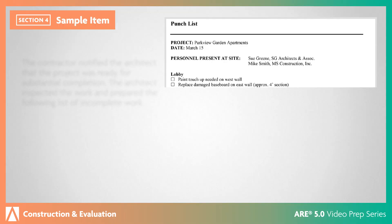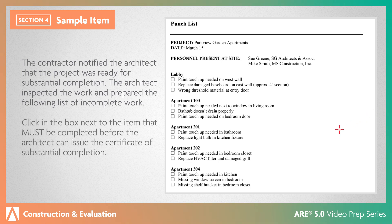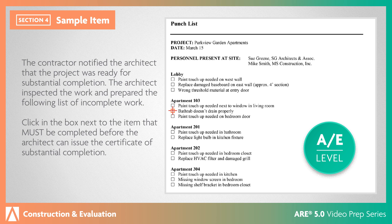Let's look at a sample question. The contractor notified the architect that the project was ready for substantial completion. The architect inspected the work and prepared a list of incomplete work. Click in the box next to the item that must be completed before the architect can issue the certificate of substantial completion. According to the Project Resource Manual, CSI Manual of Practice, reaching substantial completion does not mean all the work is completed. However, any remaining work must not prevent the owner's use of the building. The only item on this punch list that prevents full use of the building is the bathtub that doesn't drain properly. This AE-level item requires you to evaluate a typical construction procedure and determine the outcome.